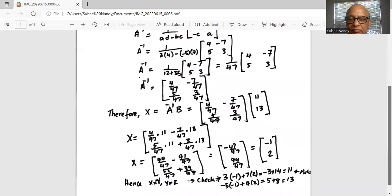Now we'll complete the multiplication. 4 times 11 is 44 over 47 minus 7 times 13 is 91 over 47. Second row: 5 times 11 is 55 over 47 plus 3 times 13 is 39 over 47.